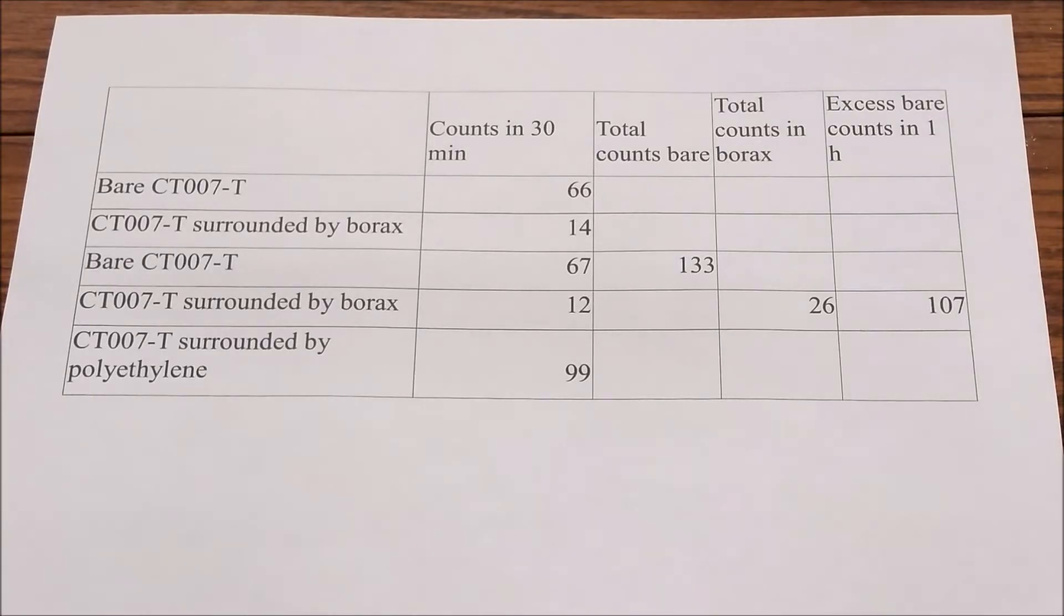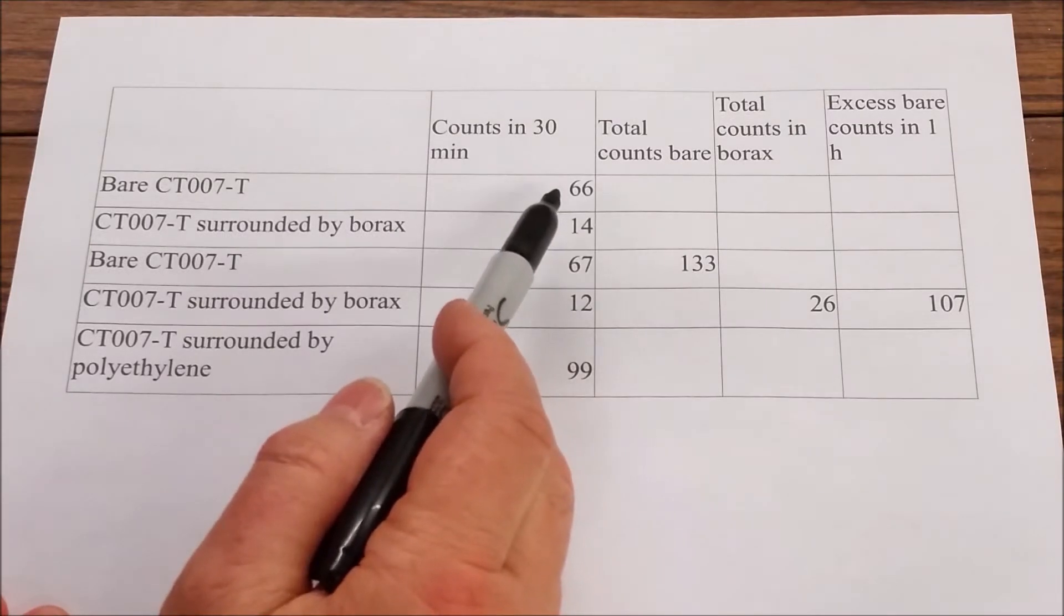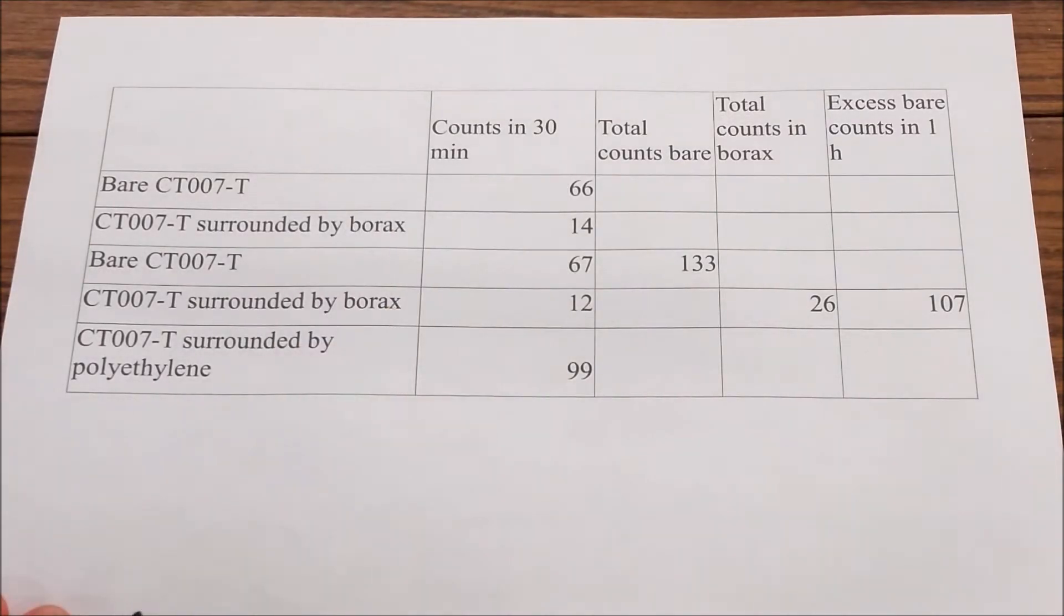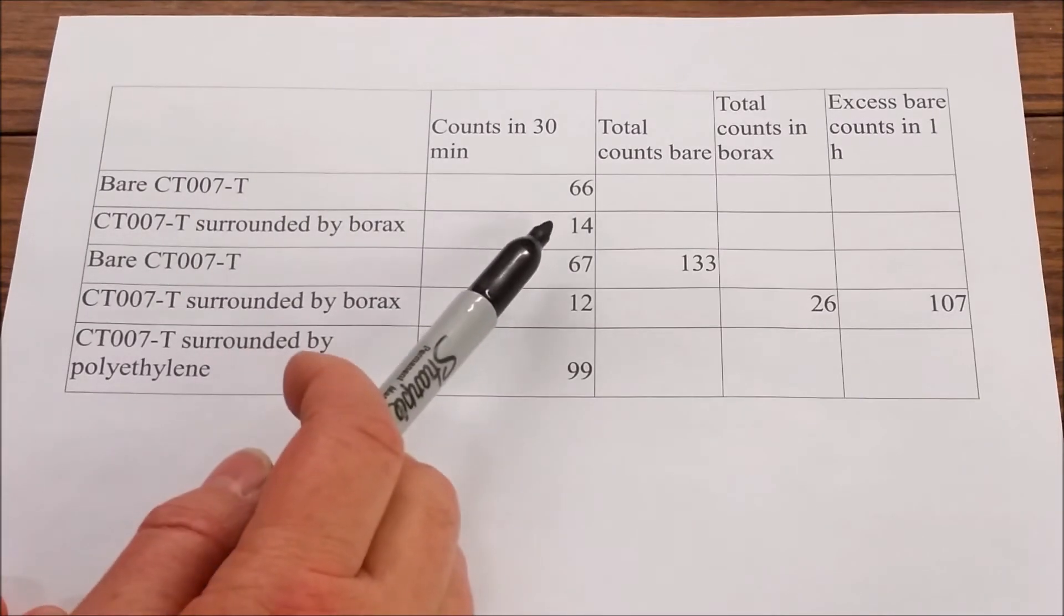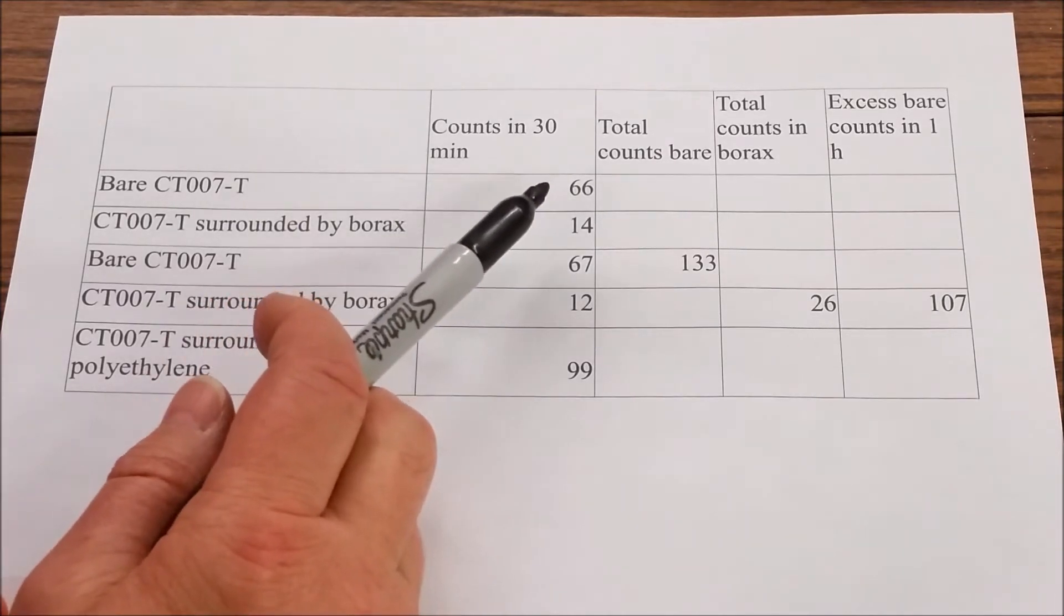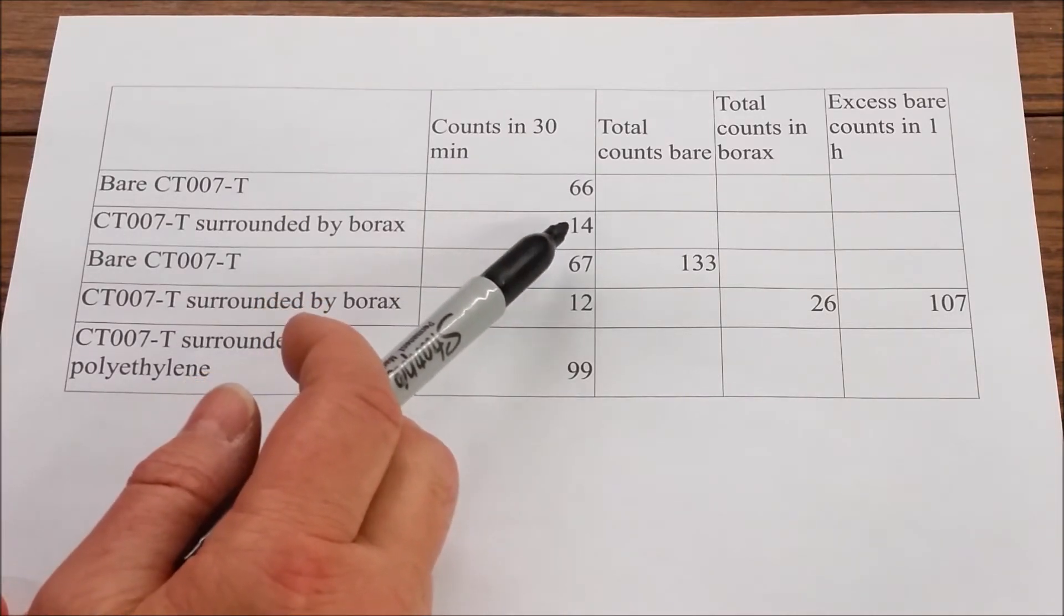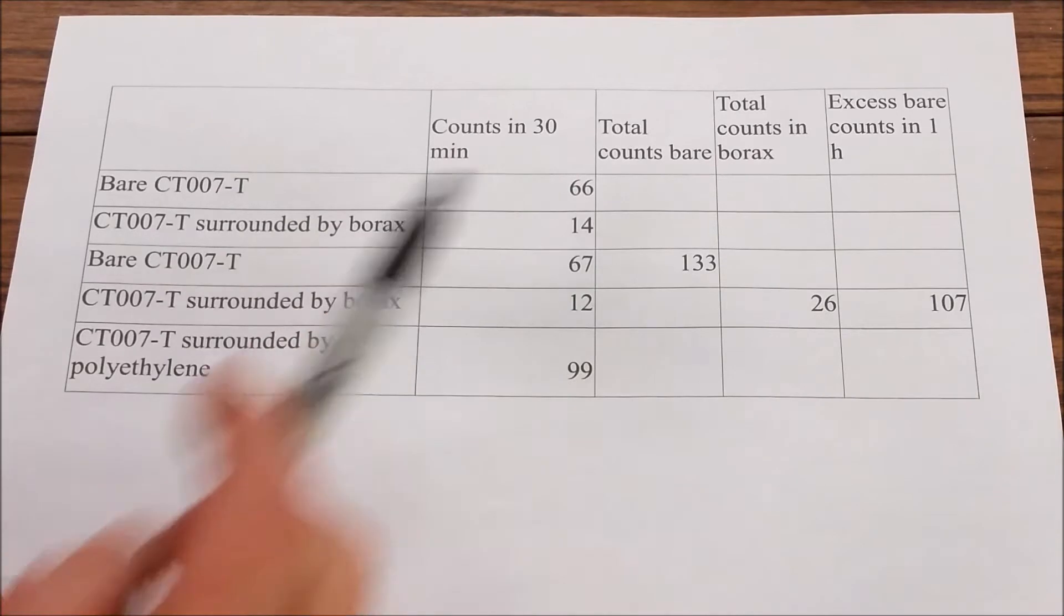So we've done our measurements and the first count with a bare neutron detector was 66 counts in 30 minutes. Then we covered it in borax and we got 14 counts in 30 minutes. So that tells us that what we're counting is really neutrons because they would have been the ones that are absorbed by the borax.